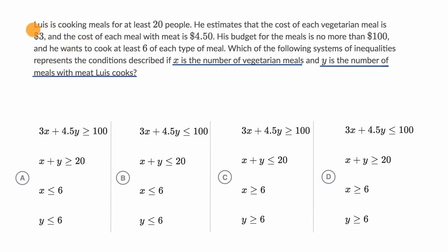The first one is they say Luis is cooking meals for at least 20 people. So that tells us that the total number of meals, which is going to be the number of vegetarian meals, that's X, plus the number of meat meals, that has to be at least equal to 20. So that has to be greater than or equal to 20.